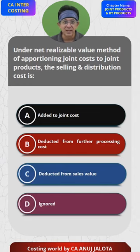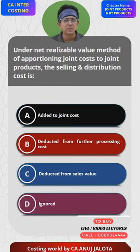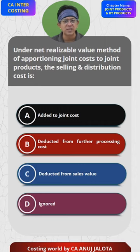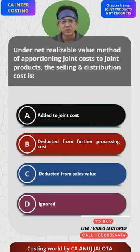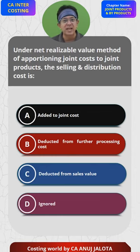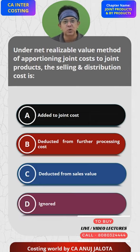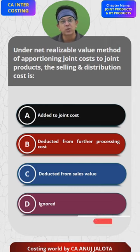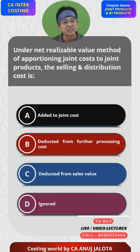When they are talking of the net realizable value method, they are referring to the adjusted net realizable value method. Under the adjusted net realizable value method, we start from the final sales value, we deduct the estimated profit, and we reduce all costs like selling and distribution, administration, and further processing cost to arrive at the apportionment of estimated joint cost. The actual joint cost is then divided in the ratio of estimated joint cost.